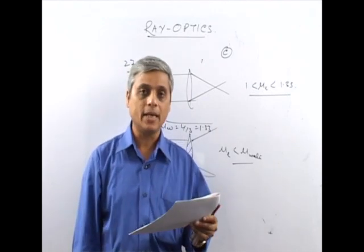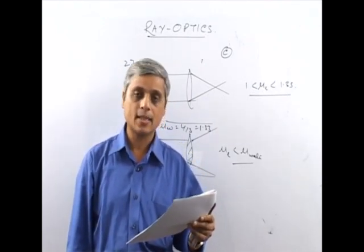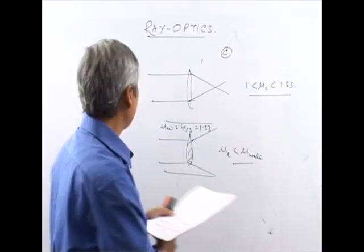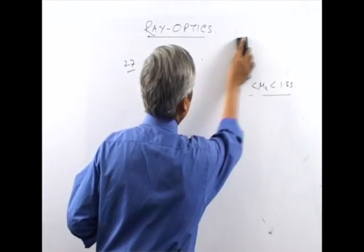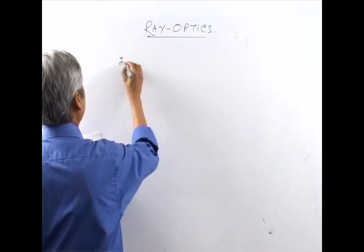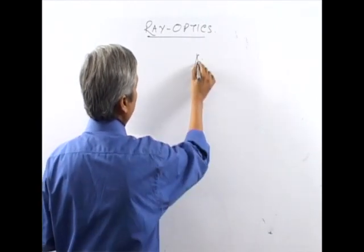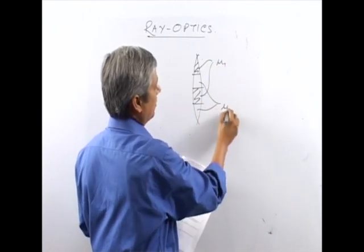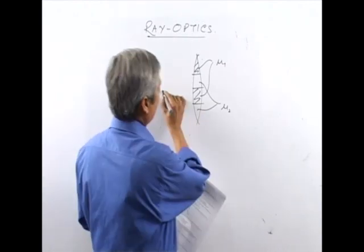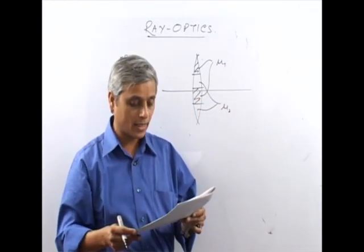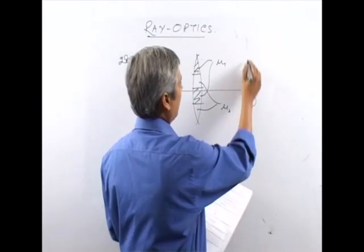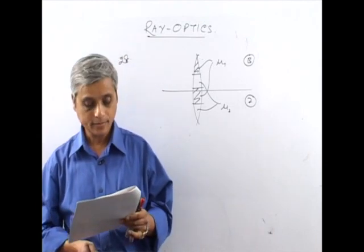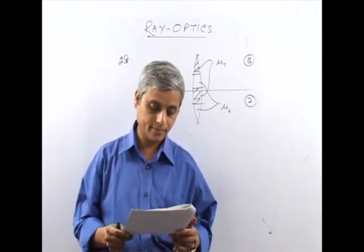Question number 28: A lens made of two different materials — a point object is placed on the axis. How many images will the lens form? Although there are two parts of the lens, there are only two media present. This lens behaves as two different lenses, so there will be two distinct images. The answer is B.